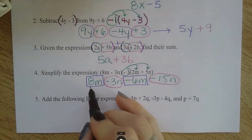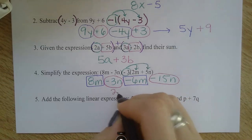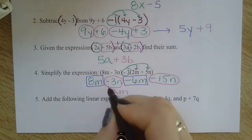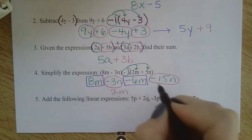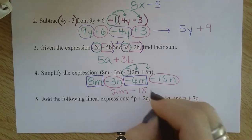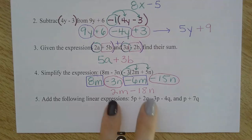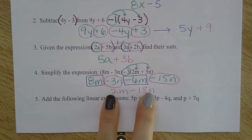So 8 minus 6 is 2m. And negative 3 and negative 15 make negative 18n. I can't put the m's and n's together — they're not like terms with each other — so it stays two separate terms.